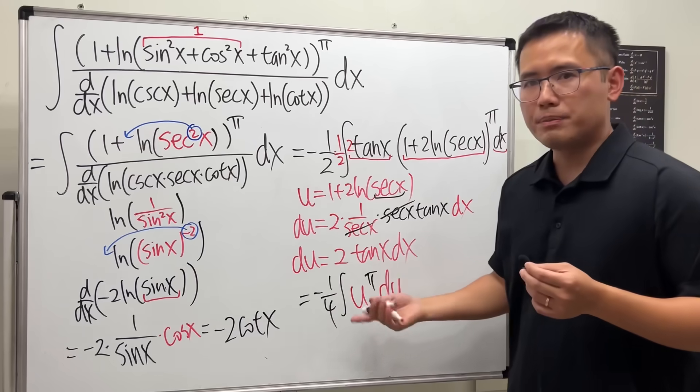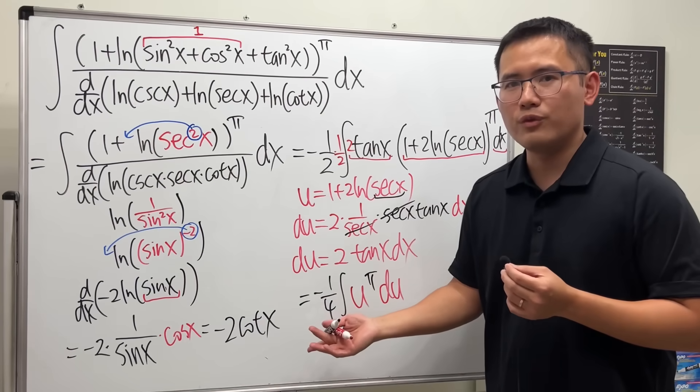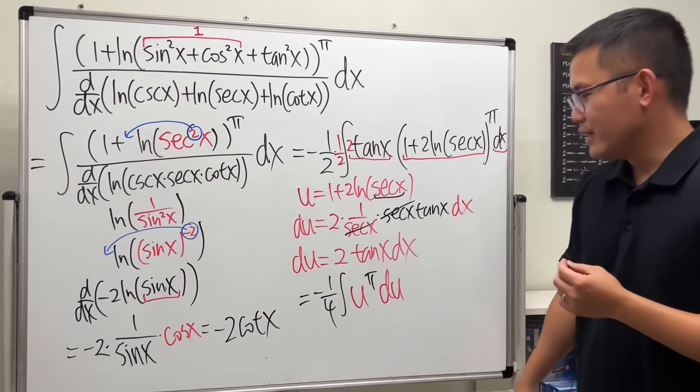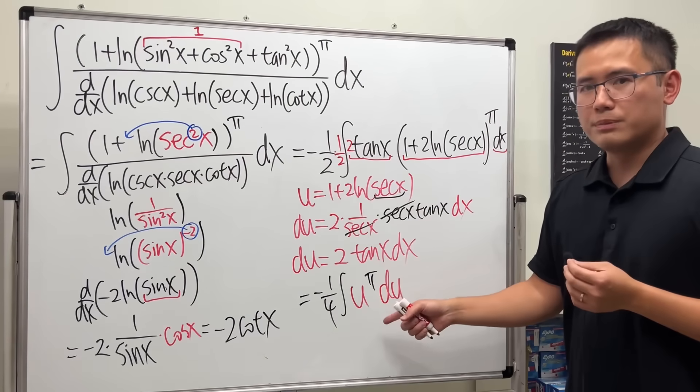Now, u to the pi's power, pi is just a nice index number, 3.14159. It actually never ends, so it's not so nice. It's irrational. But it's just a number, we can use the reverse power rule.